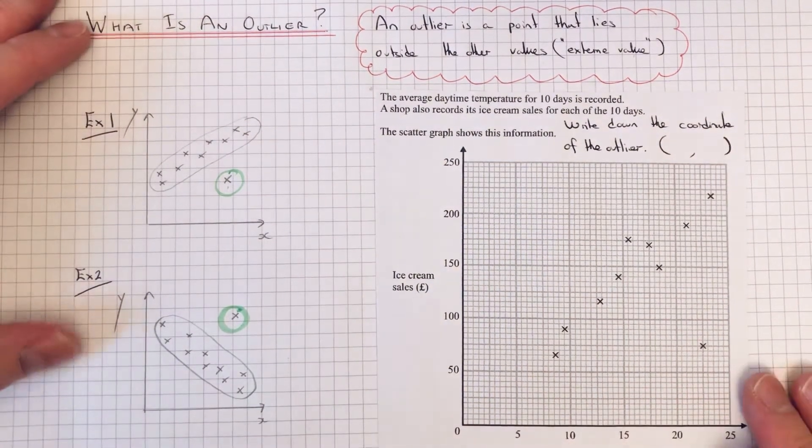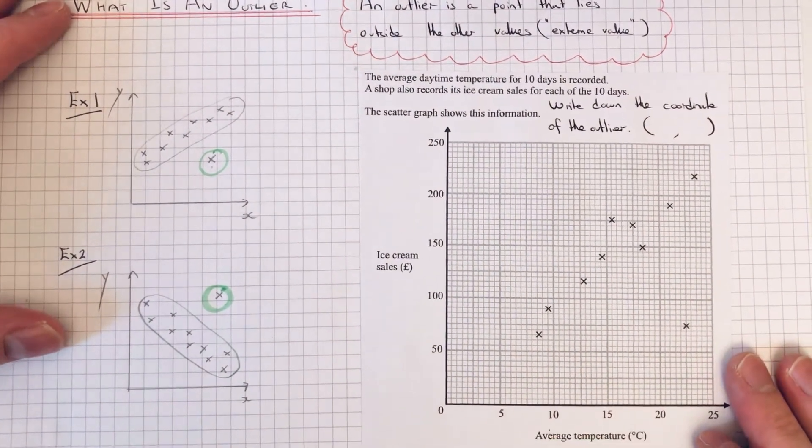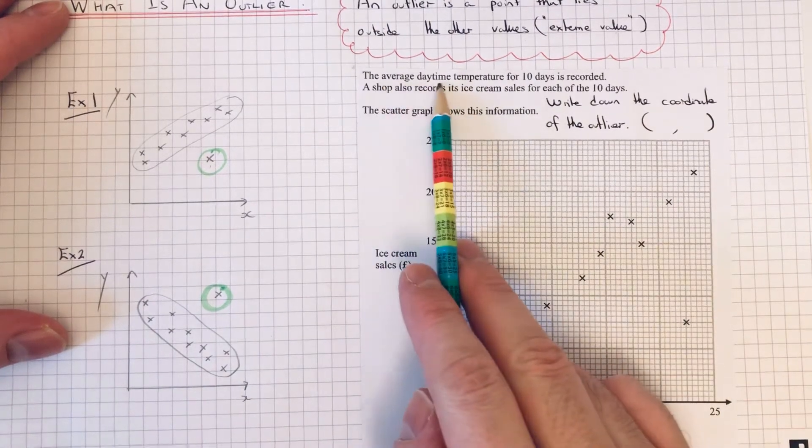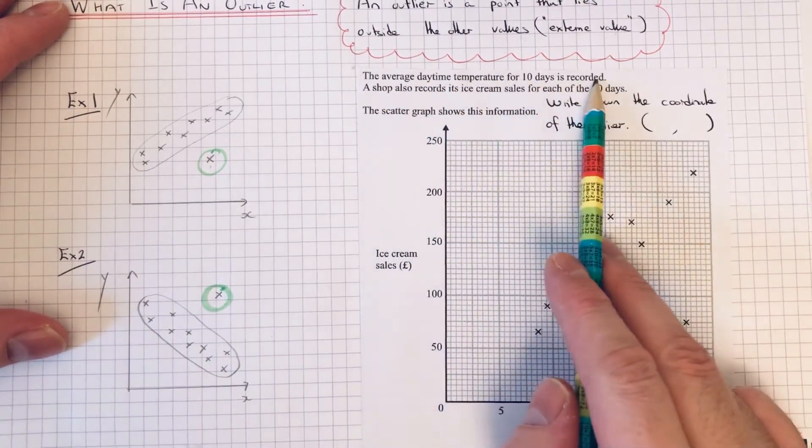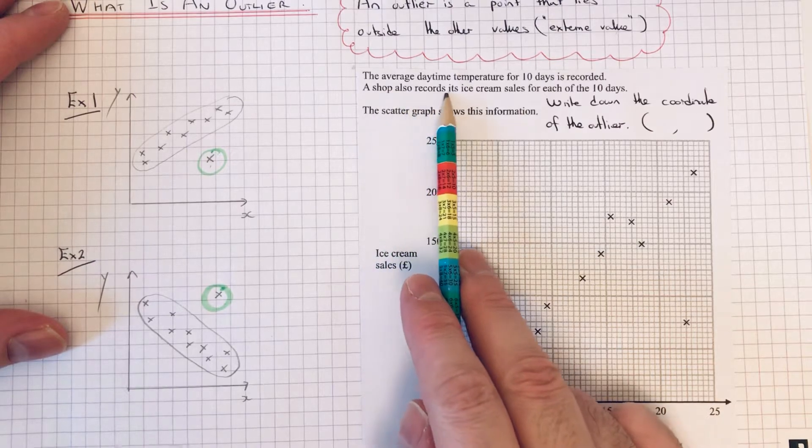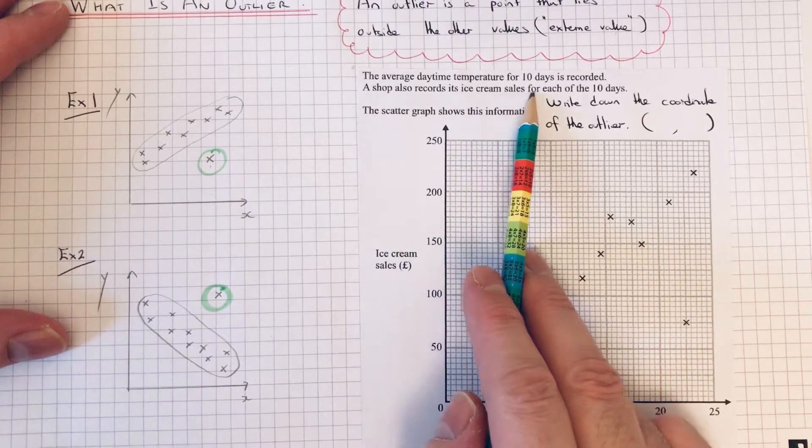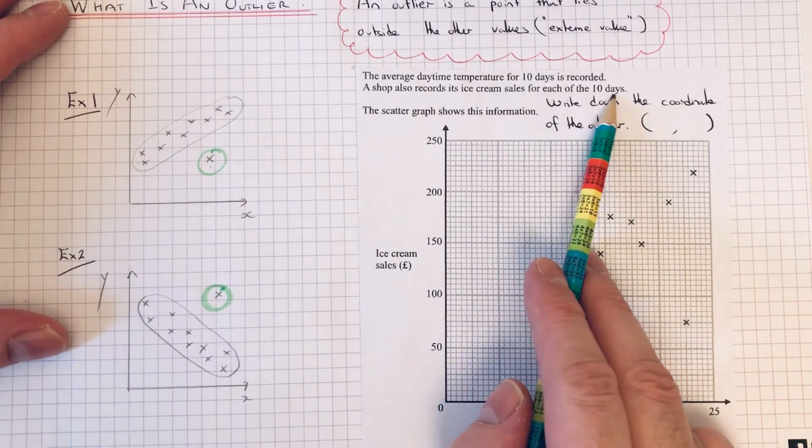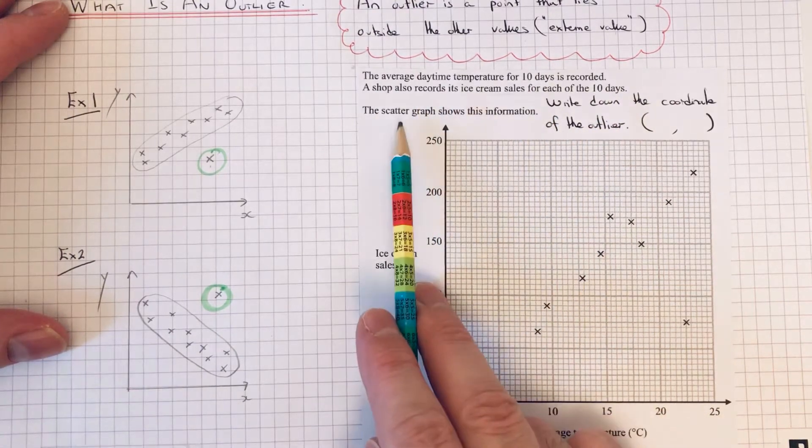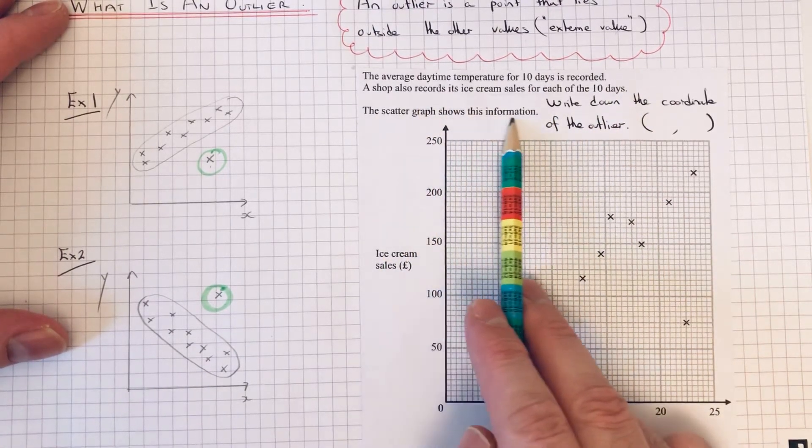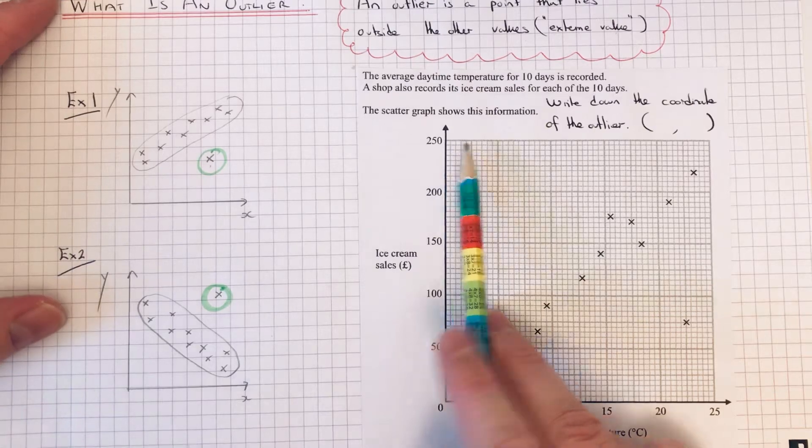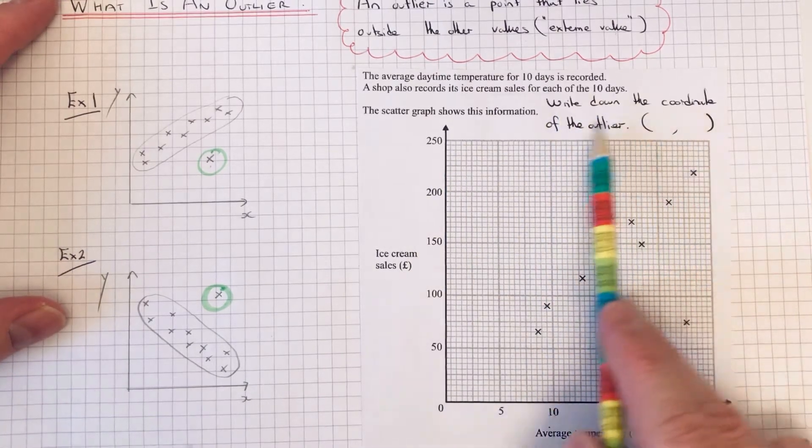Let's have a look at an exam question. The average daytime temperature for 10 days is recorded. A shop also records its ice cream sales for each of the 10 days. The scatter graph shows this information. The question is to write down the coordinate of the outlier.